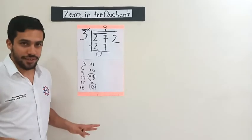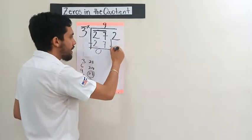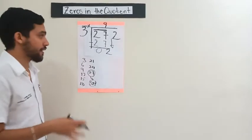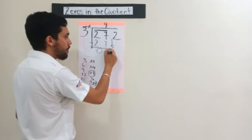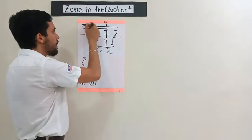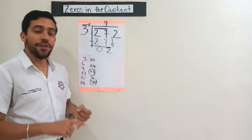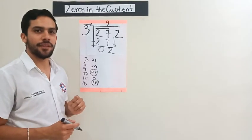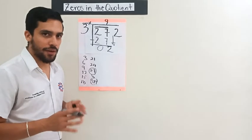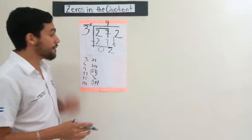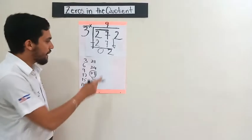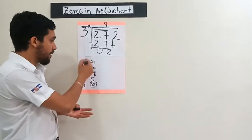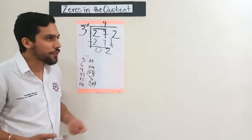Now we are not done yet. We need to bring down the last number, which is 2. This is very important. Again, compare 2 and 3. Is 2 greater, less, or equal to 3? Well, if you thought about it well, you know that 2 is less than 3. And if we look at the times tables, there is no 2 over here.